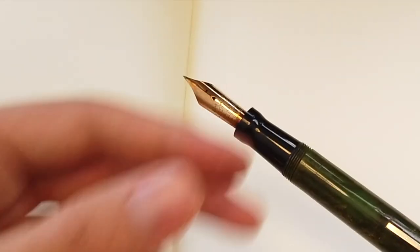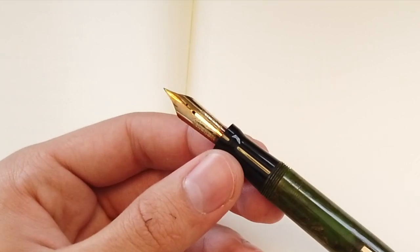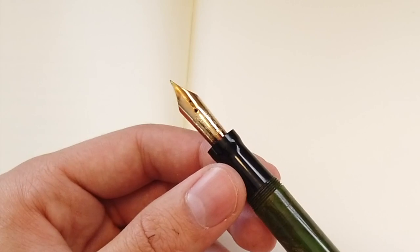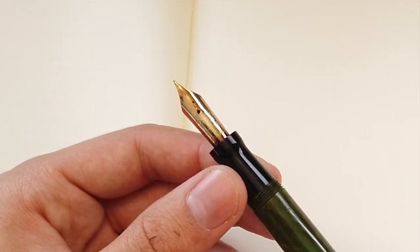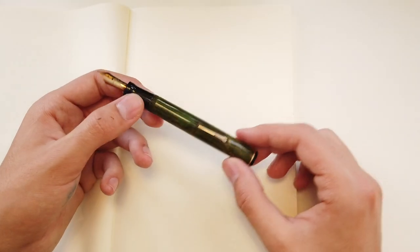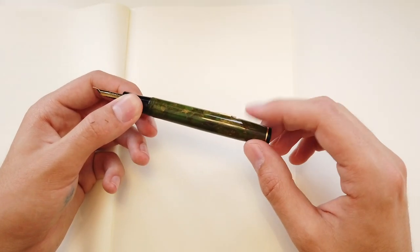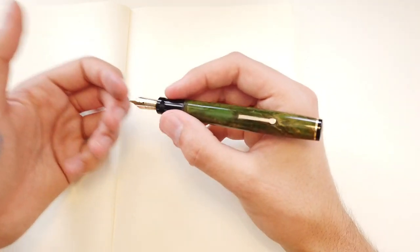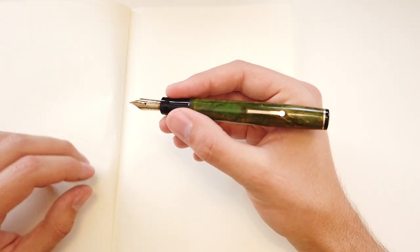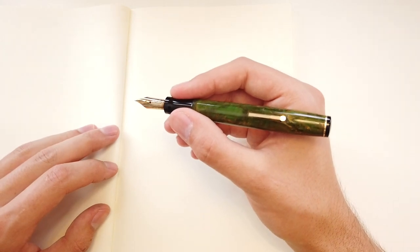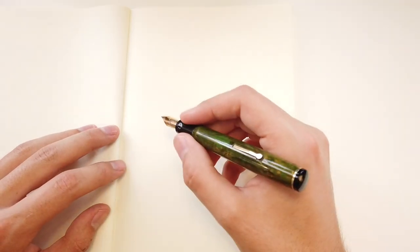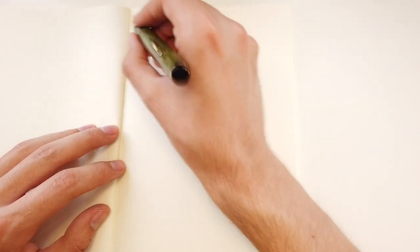This one has a signature nib, which could either be in flex or firm. This one's kind of a semi-flex and it's a nice solid vintage fine. It's a lever filler and it's actually a really big pen by vintage standards. It has a full number 20 size sack, so it holds about two milliliters of ink and makes for a great comfortable everyday writer.